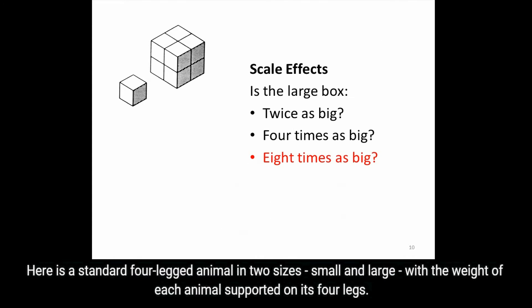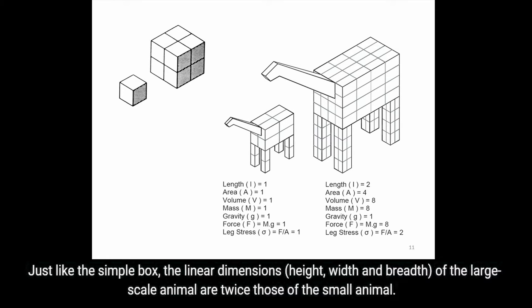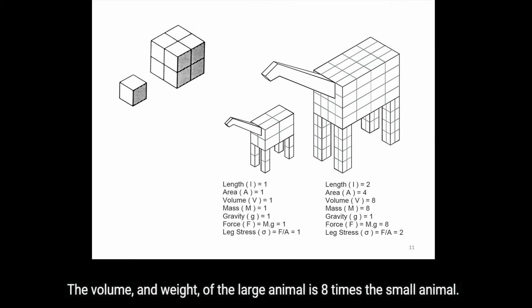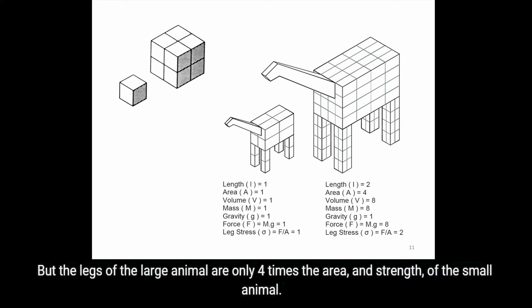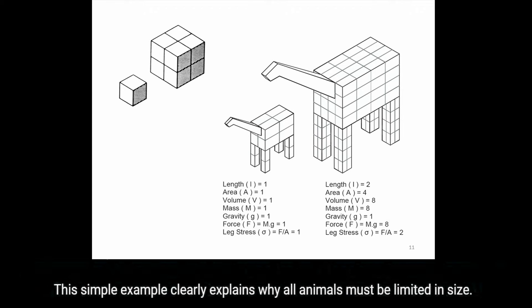Here is a standard four-legged animal in two sizes, small and large, with the weight of each animal supported on its four legs. Just like the simple box, the linear dimensions—height, width and breadth—of the large scale animal are twice those of the small animal. The volume and weight of the large animal is 8 times the small animal, but the legs of the large animal are only 4 times the area and strength of the small animal. The large animal's leg stress is twice the small animal's leg stress, because the weight of the large animal has increased quicker than its strength due to the scale effect. This simple example clearly explains why all animals must be limited in size.